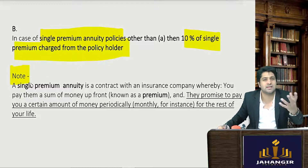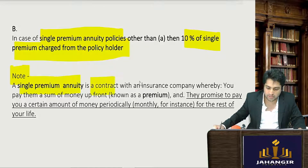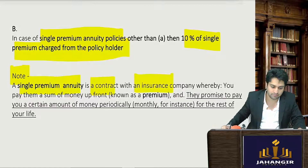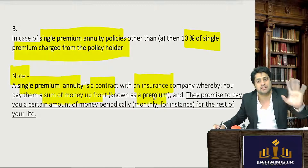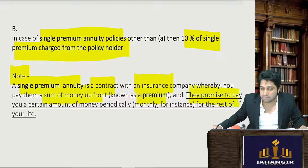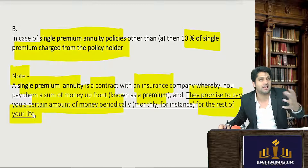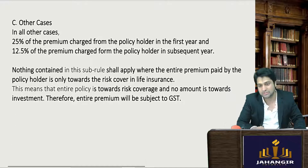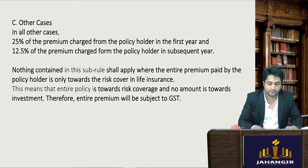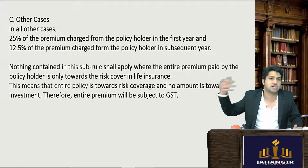A single premium annuity is a contract between the insurance company where you pay a sum upfront known as a premium, and the insurance company promises to pay you a certain amount periodically for the rest of your life after a certain date as mentioned in the contract. Annuities are very good — it's like a pension you give yourself so that in future the insurance company keeps paying you continually for your lifetime.